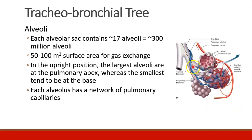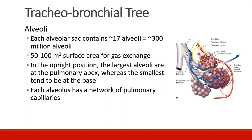Each alveolus has a capillary network, which begins with the pulmonary artery that brings blood to the alveoli, branching into this network of capillaries, and then after oxygenation, the blood is returned to the heart through the pulmonary venules.